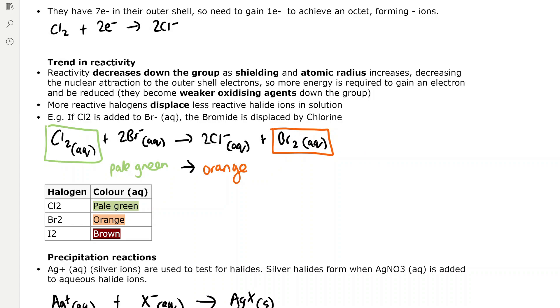The halogens have seven electrons in their outer shell, so they need to gain one electron to achieve the octet rule, which is eight electrons, forming one minus ions. For example, chlorine gains two electrons to form two Cl minus ions.